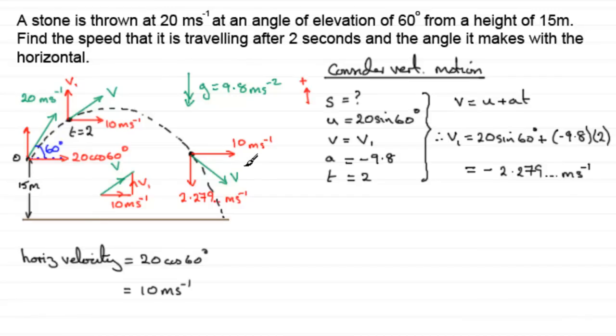We need to find v by Pythagoras' theorem. Let me just draw that triangle out again. Let's just put that as 10 that way. And now that velocity down there is 2.279 and so on. So we're out to try and get that v through there. So by Pythagoras' theorem, v will be equal to the square roots of the sum of the squares of the other two shorter sides. So we've got 2.279 and so on squared, plus this side squared, 10 squared.